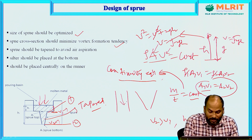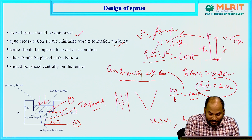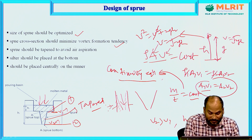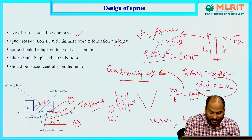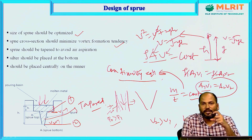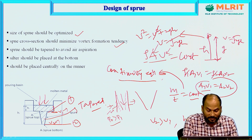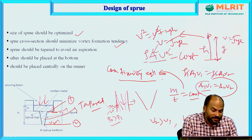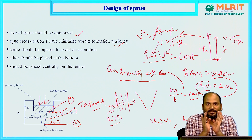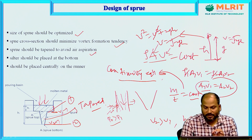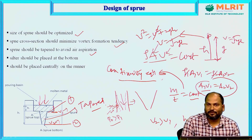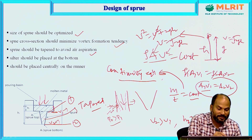If the liquid leaves contact with the sprue walls, the pressure in that gap becomes very low. Since the outer surface is exposed to atmospheric pressure p₀, this p₀ will be greater than the internal pressure p₁. This pressure difference forces the surrounding sand mould material inward — this is known as the aspiration effect — resulting in various casting defects. That is why the sprue is made with a tapered cross section: to avoid the aspiration effect.